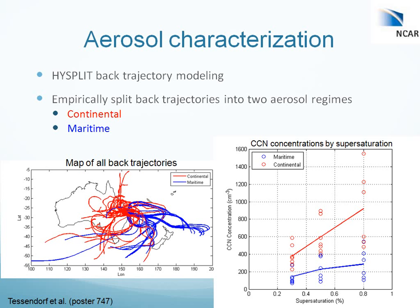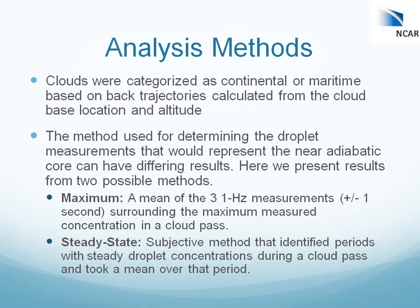For the aerosol characterization, we used a back trajectory model — in particular the HYSPLIT model — and empirically split the back trajectories into two aerosol regimes: continental and maritime, based on whether the air trajectory spent the majority of time over land or over water. The results for cloud condensation nuclei concentrations by regime show that maritime back trajectories had much cleaner, lower CCN concentrations, while continental back trajectories had higher CCN concentrations and higher aerosol loading.